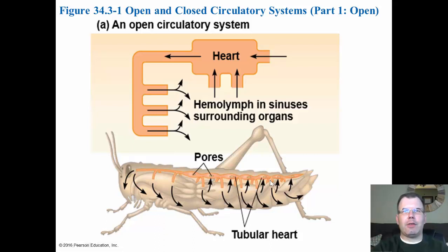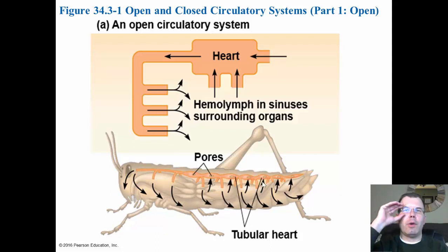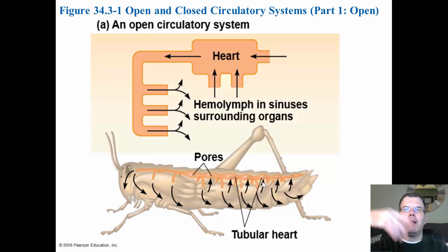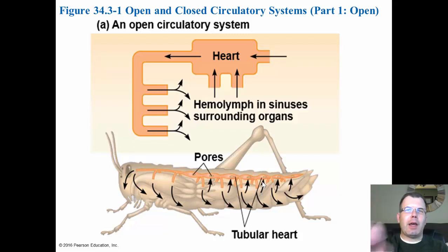With insects you see they have multiple hearts — a tubular heart with pores on the side that bring the fluid in so it can be pumped out again. There are really no lungs. Insects have spiracles and trachea that allow them to exchange gas — we'll look at that next time. But for the fluid itself they use an open circulatory system.